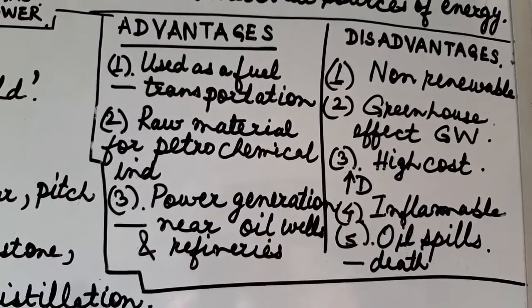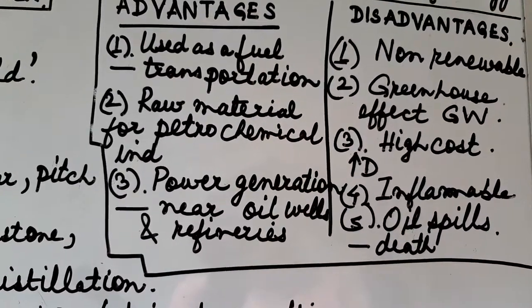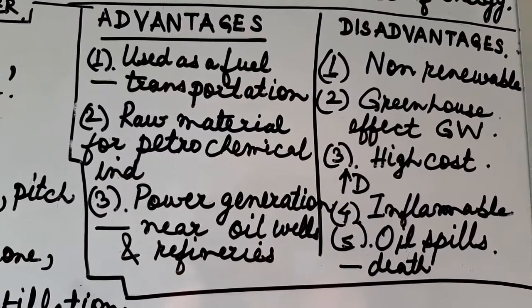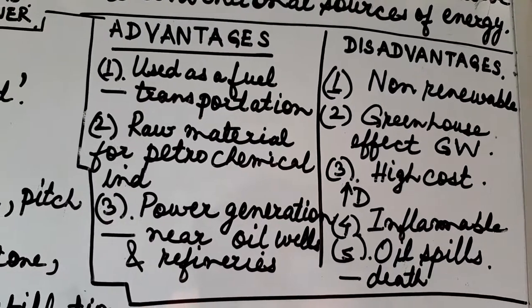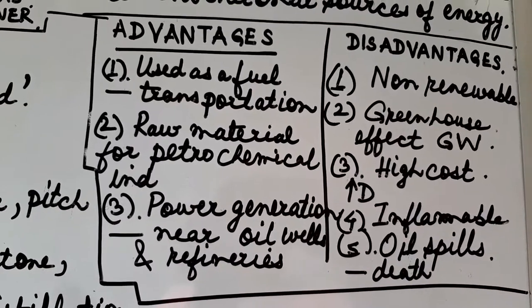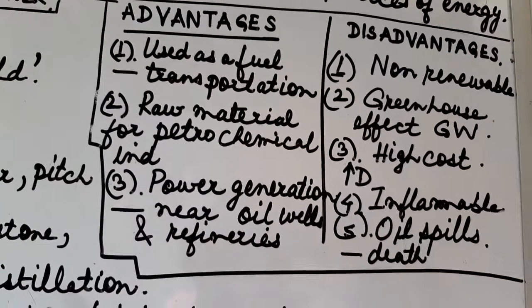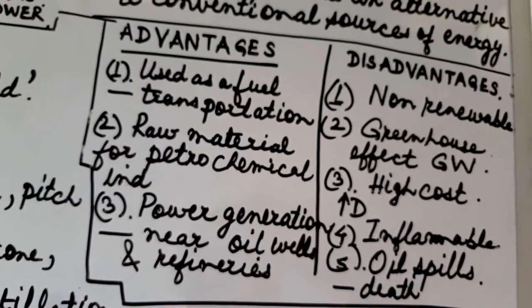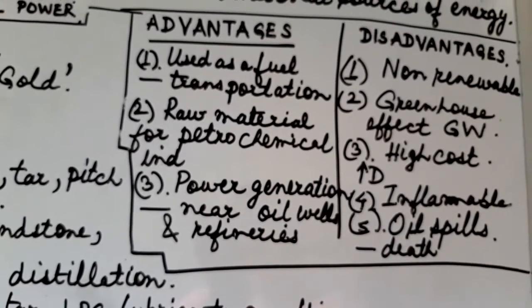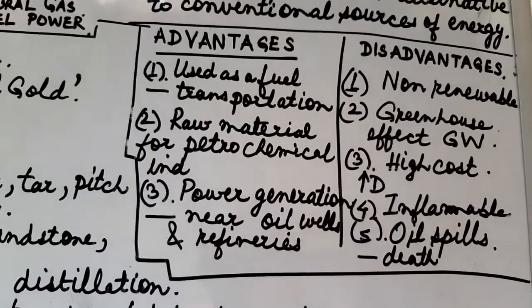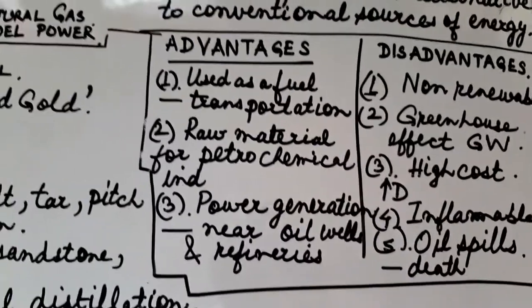Petroleum also has certain disadvantages. It is a non-renewable resource that will eventually exhaust. It produces greenhouse gases and causes global warming. Due to increased demand, the cost of petroleum is very high. Petroleum is inflammable, and during mining, oil spills might occur. Since petroleum is found on the continental shelf, oil spilled in water causes the death of marine animals.